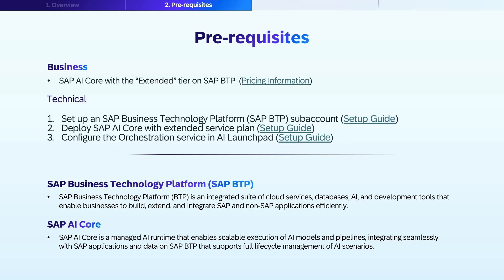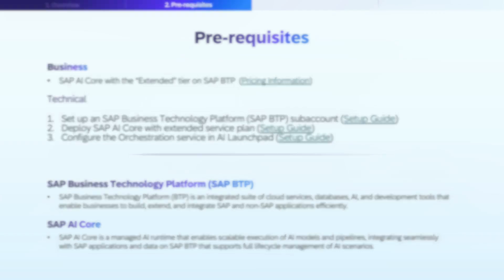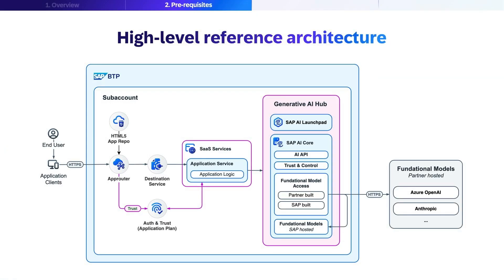SAP AI Core supports full lifecycle management of AI scenarios. The SAP AI Core orchestration service enables usage of features such as data masking, content filtering, and prompt templating. The service is part of SAP AI Core and requires an extended service plan. By setting up these prerequisites, you'll establish a strong foundation for implementing AI projects efficiently and at scale.